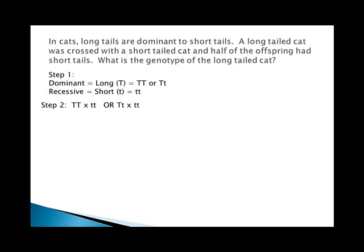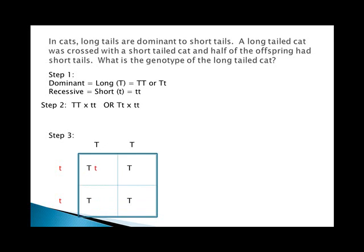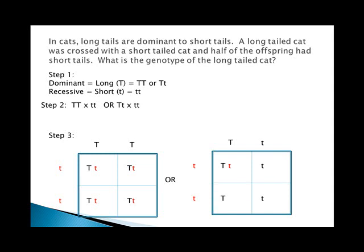We don't know what that long-tailed cat is, so we have to do two crosses: one with a homozygous dominant and one with a heterozygous dominant. That means we set up two Punnett squares. Looking inside the squares, the only one where we get short-tailed cats as a result is the second square — the one starting with the heterozygous dominant.